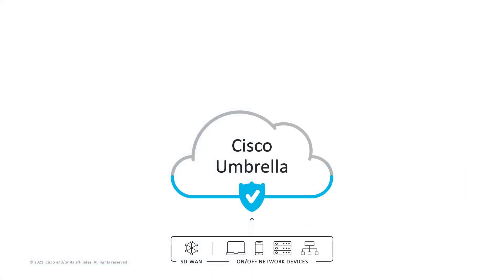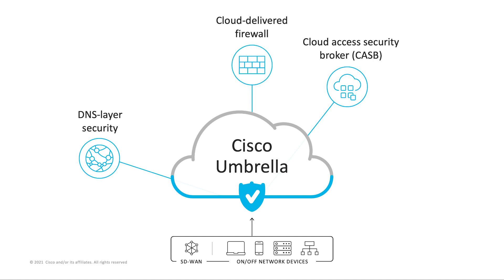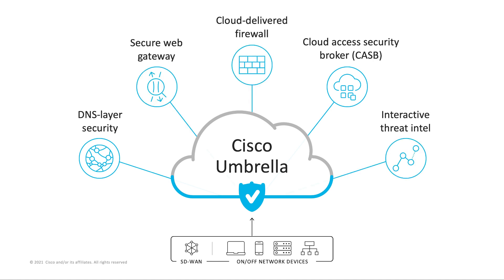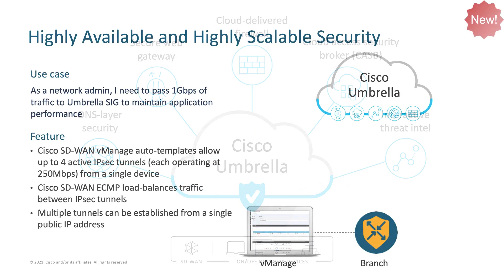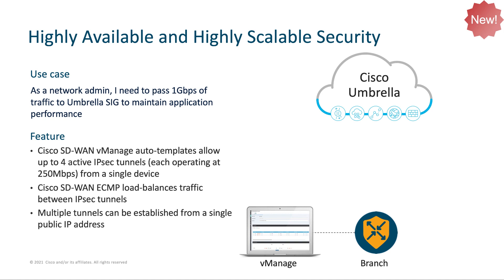Umbrella SIG is Cisco's SASE solution, offering DNS layer monitoring, CASB, firewall, URL filtering, and extensive monitoring from the cloud. Any one or all of these features can be applied to your users' traffic, regardless of their network access method. Pretty cool, but where does SD-WAN fit in? SD-WAN is just one of the many different methods that you can deliver your users' traffic to Umbrella SIG.